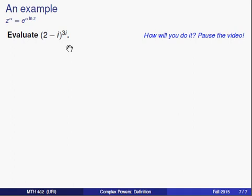All right. Well, let's start by evaluating the expression, plugging in the 2 minus i and the 3i into our formula for the definition. We'll put the 3i in front of the logarithm of 2 minus i.